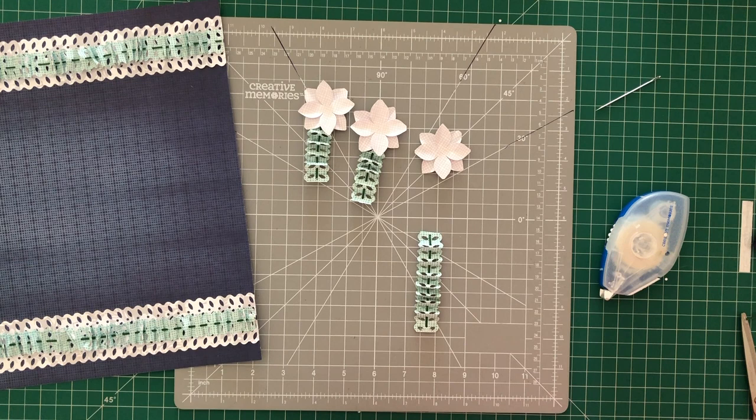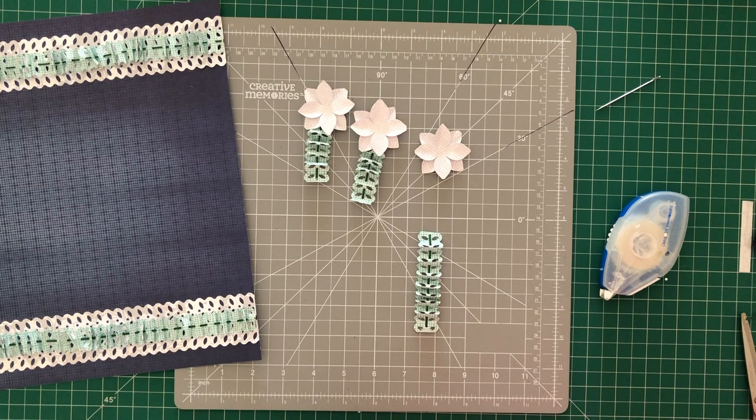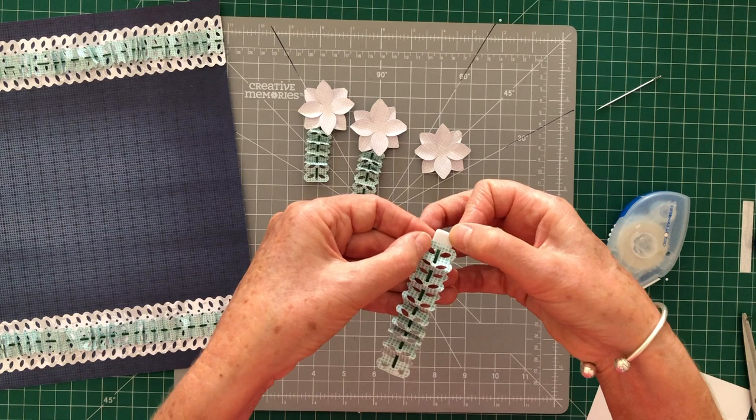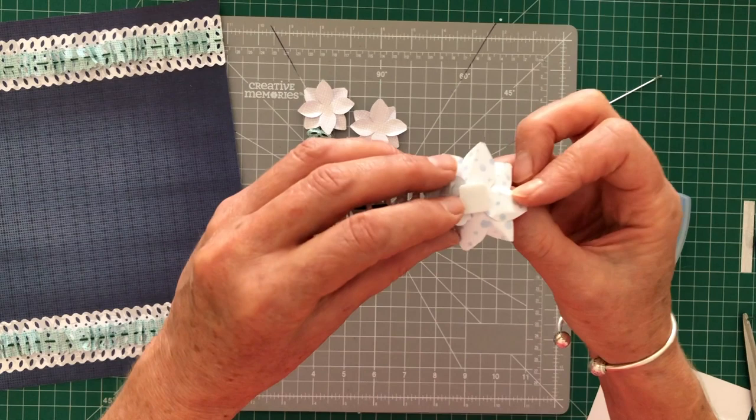So now to attach the flower. I'm going to use one of the foam squares, but one of the larger foam squares. So what I'm going to do is just pop the foam square on the tip of the stem. Then I'm going to stick that on the back of the flower, just there. And then we've got our flower stuck to the stem.